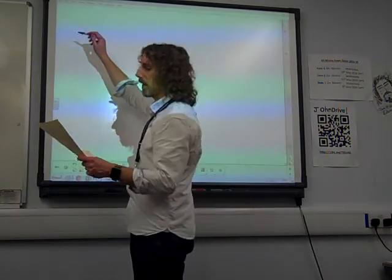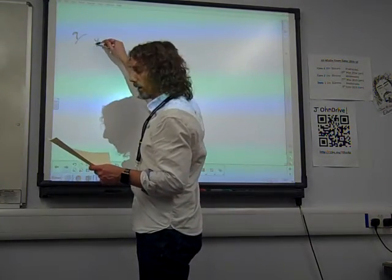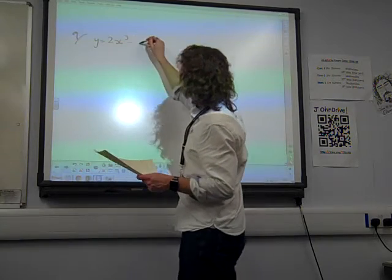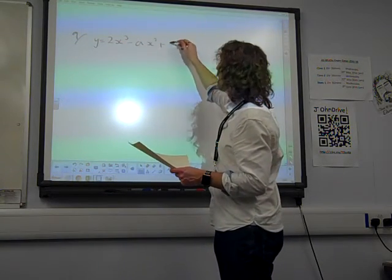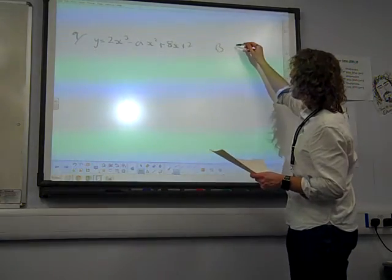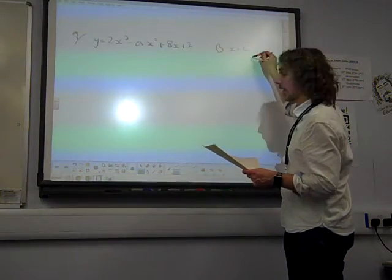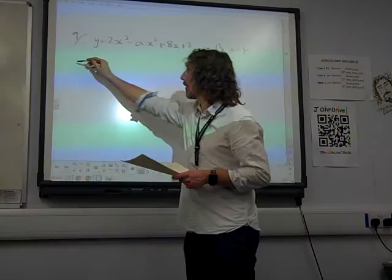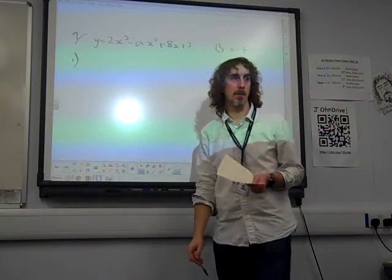Question 9 says, the curve y equals 2x cubed minus ax squared plus 8x plus 2 passes through the point B where x is 4, and in part 1 we get told an extra bit of information.